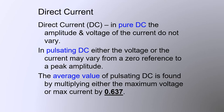Here we can visualize the pulsating current or voltage. It never drops below zero or changes polarity but does go from zero to a peak value and then back to zero. The average value is found by multiplying either the peak voltage or peak current by 0.637.